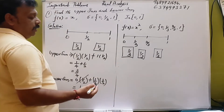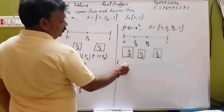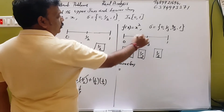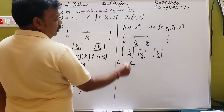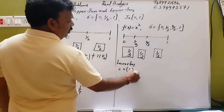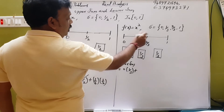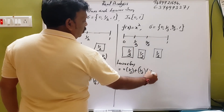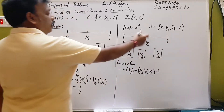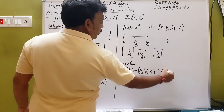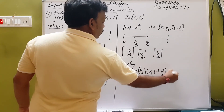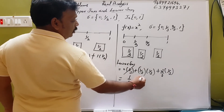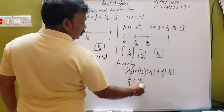If you want to write a lower sum, you can write the lower sum. This interval is 0, so it is 0 into 1 by 3. Then 1 by 3 is 1 by 3, and 2 by 3 is 2 by 3. So, 2 by 3 gives 1 by 3. Then: 0 into anything is 0, then 1 by 9, then 2 into 2 is 1, giving 2 by 9.